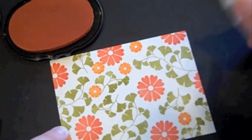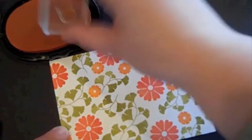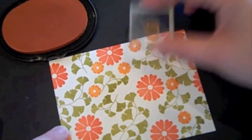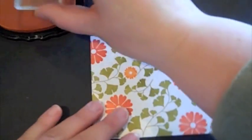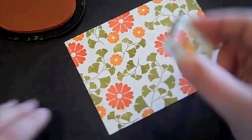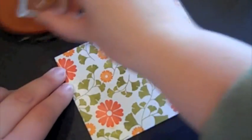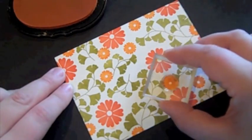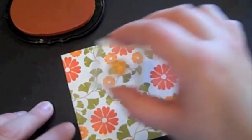And again, kind of paying attention to the balance that I want to create. And with these particular ones, I'm kind of not being as careful about colors not overlapping. I think the orange looks nice when it overlaps with the green.